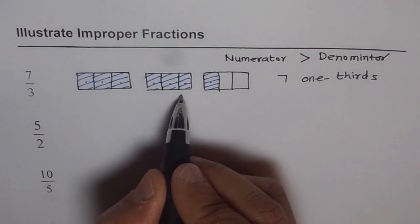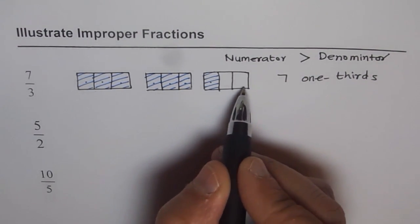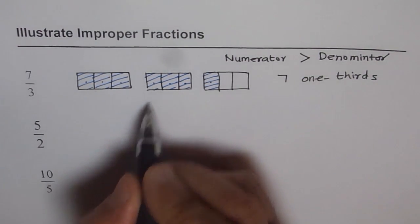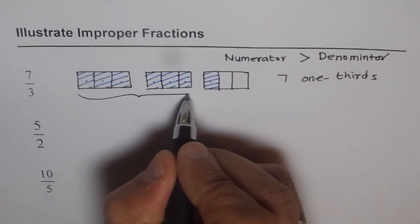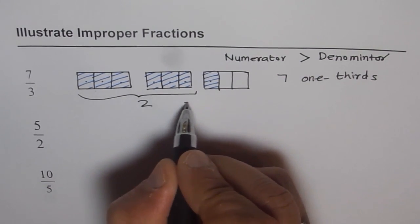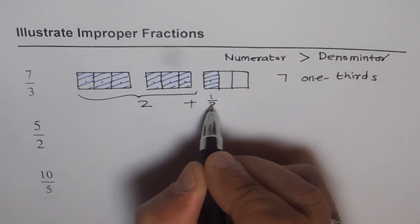It is 2 whole and 1 one-third. So it is also equal to, this is 2 whole and 1 one-third, right?